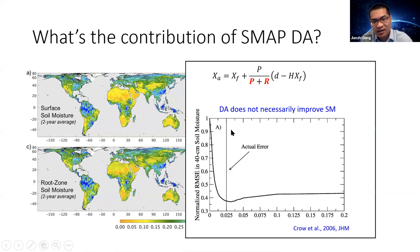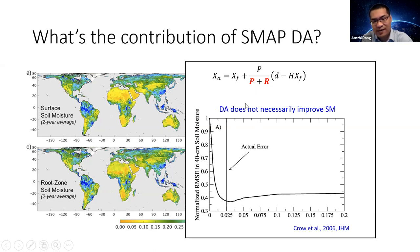However, we do know that the efficiency or accuracy of a data assimilation system is affected by many factors. For example, in the paper by Wade Crow 2006, he demonstrated that if we make the error assumptions of the observation and the model error incorrectly, we are very likely to get a suboptimal result. For some extreme cases, data assimilation can even make results worse, which means we are better off not doing data assimilation if we do it wrong.